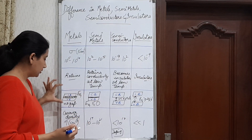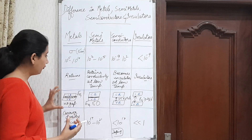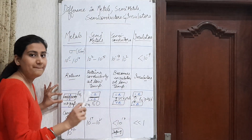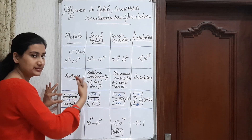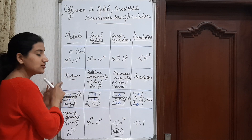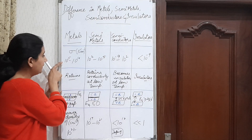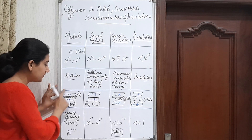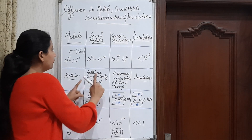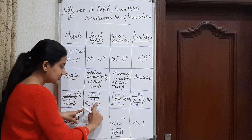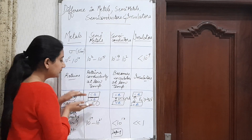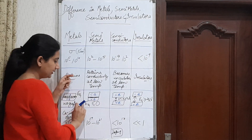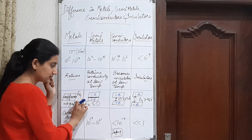Now if we talk about the energy band diagram for metals, semi-metals, semiconductors, and insulators: for metals there is no gap between the conduction band and the valence band — they overlap each other, which is why conductivity is so high and remains very good at low temperatures. For semi-metals, the energy gap is either less than zero or equal to zero, meaning the conduction band and valence band are either touching or overlapping.